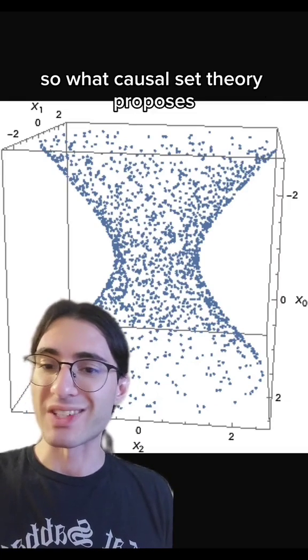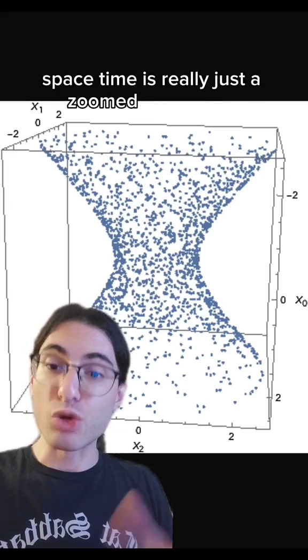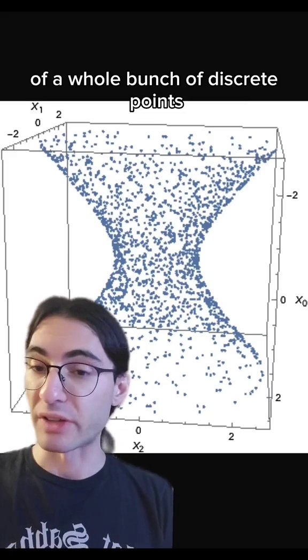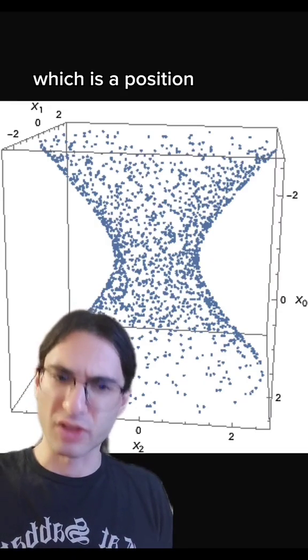So what causal set theory proposes is that instead of having a smooth, continuous spacetime, spacetime is really just a zoomed out version of a whole bunch of discrete points. Each of those points would represent a spacetime event, which is a position coupled with a time.